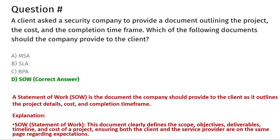The next question: a client asks the security company to provide a document outlining the project, the cost, and completion time frame. Which of the following documents should the company provide to the client? Option A: MSA. Option B: SLA. Option C: BPA. Option D: SOW.